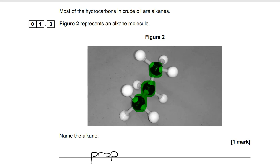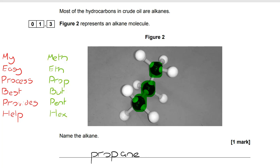Because it's an alkane, it ends in ane. And just so you can be clear, there are easy ways to remember the names of the different alkanes. You only actually need to learn the first four: methane, ethane, propane, and butane. There's actually a mnemonic here that can help though, which takes you all the way up to six. My easy process best provides help. Meth-eth-prop, but-pent-hex.